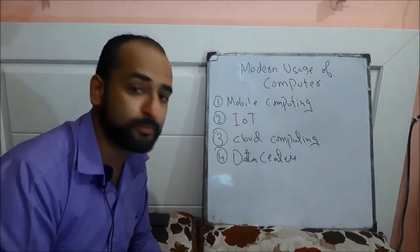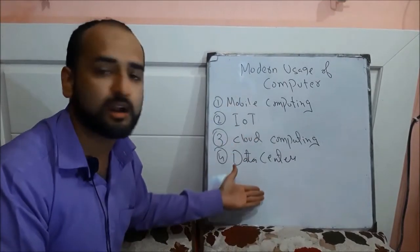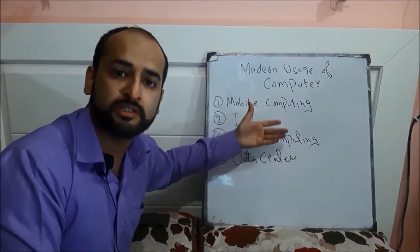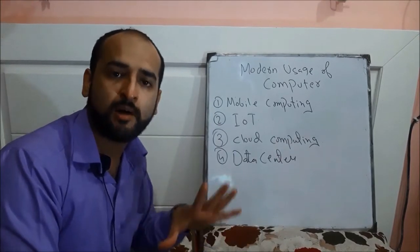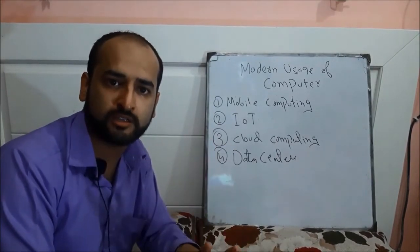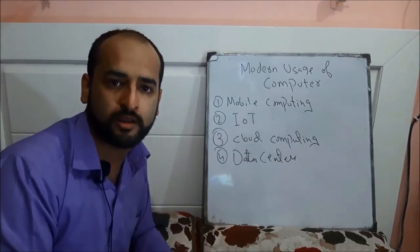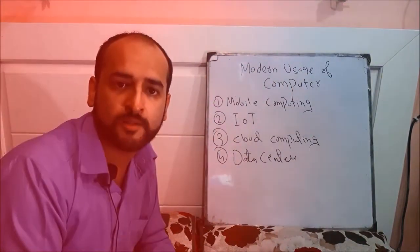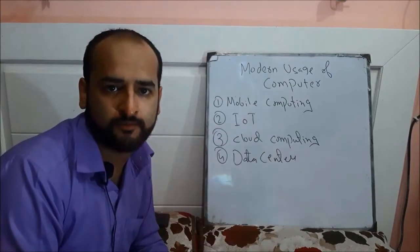This was our topic of modern uses of computer systems. Where computers are being used today, I have already told you. These are MS or PhD level research topics students are researching. Just a small introduction so that you will know what is happening in the computer field. This was our topic. I will assign homework. Thank you very much. Subscribe. Allah Hafiz.